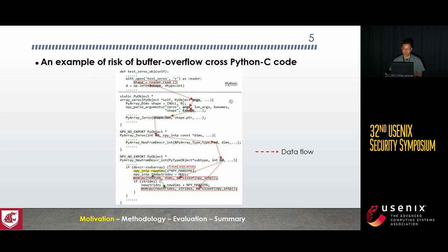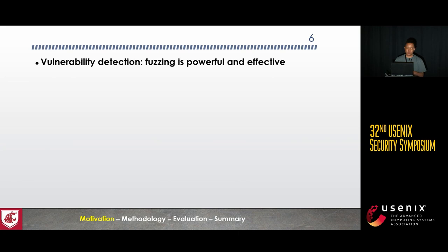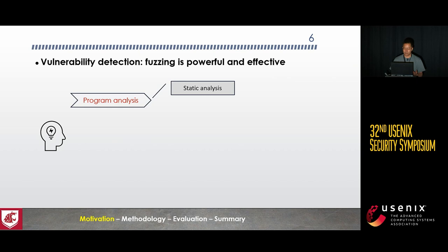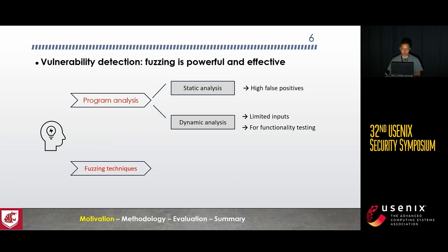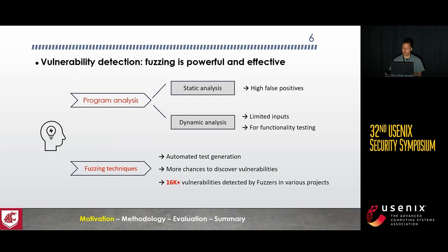The immediate impact is crashing the program and enabling an attack. To detect these vulnerabilities, two primary approaches are currently used. In program analysis, static analysis usually suffers from high false positives, while dynamic information flow analysis has efficiency of bug discovery limited by test inputs, and pre-designed tests are usually for functionality testing. To mitigate these limitations, test input generation techniques such as fuzzing can be employed. Fuzzing can automatically generate a varied range of inputs to test the software, increasing the chances to discover vulnerabilities. Over 16,000 vulnerabilities have been detected by fuzzing in various projects, confirming that fuzzing is powerful and effective in vulnerability detection.